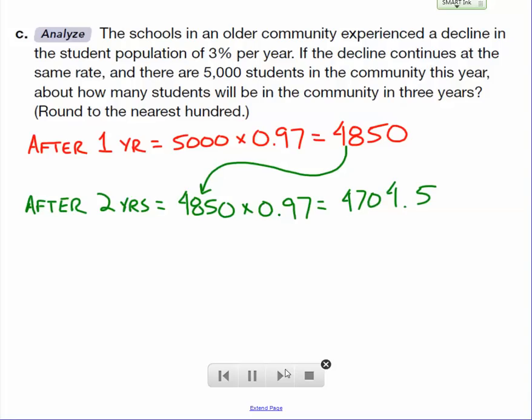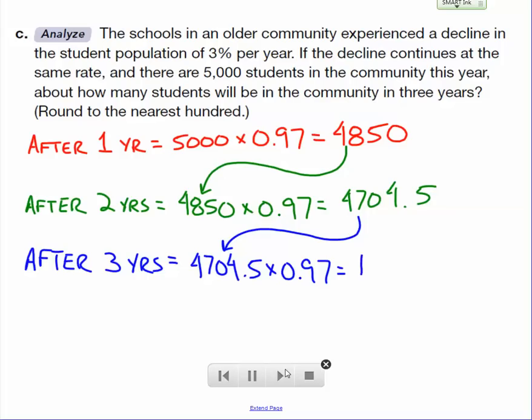I know they said round to the nearest 100, but we'll wait until the end. And then after three years, how many students are we going to have left? Well, we'll take that 4,704.5 that we had the previous year, and we're going to keep 97% of it. Every year, we're keeping 97% if we're losing 3%. So that's 4,563.365 students. We're going to round that to the nearest 100, so we'll say about 4,600 students or people.